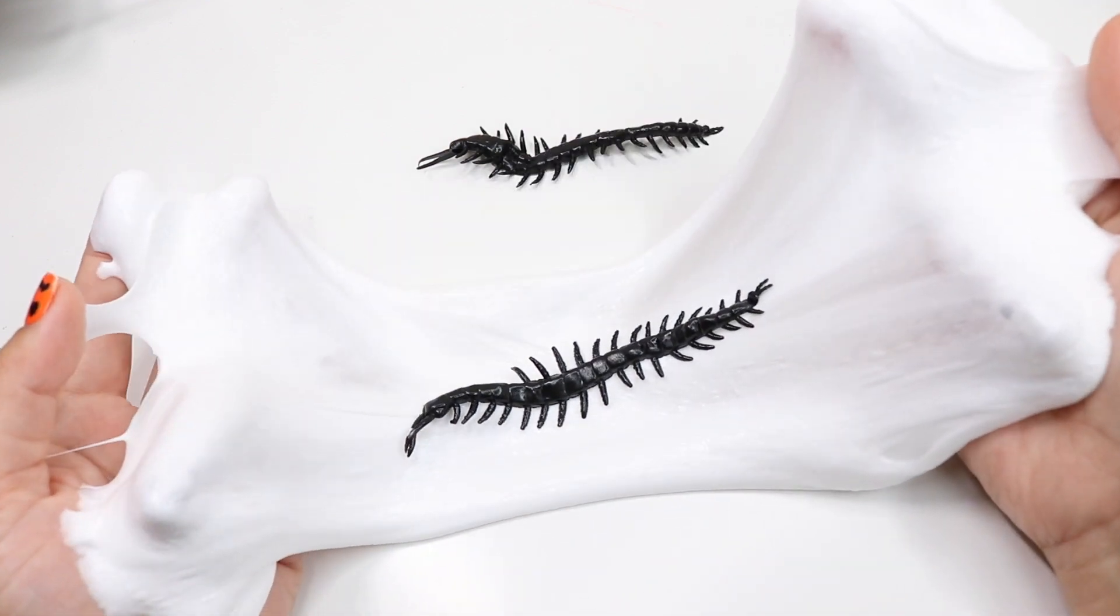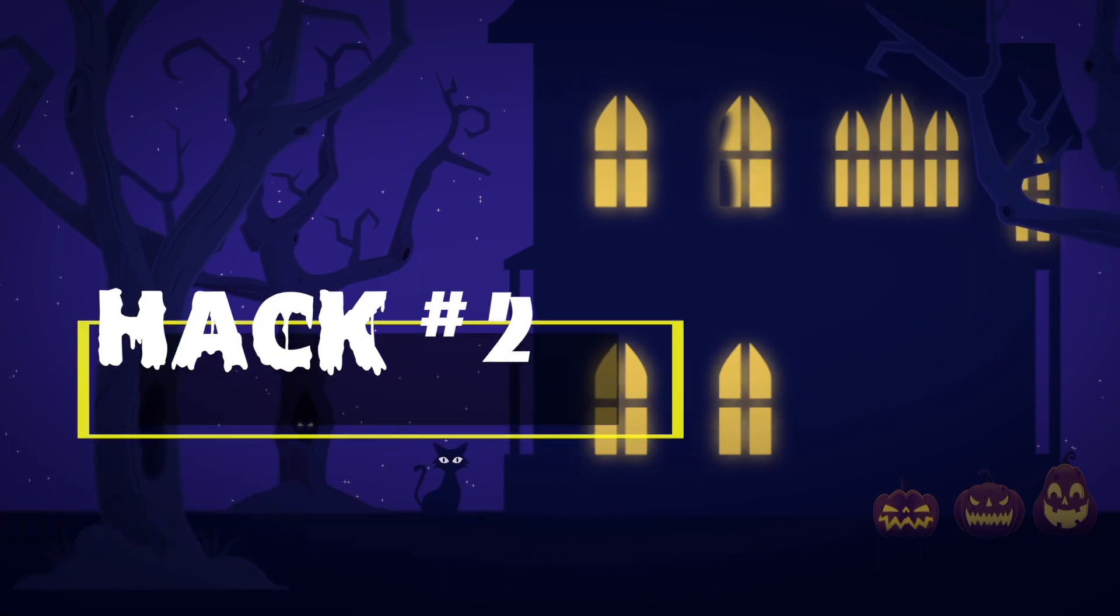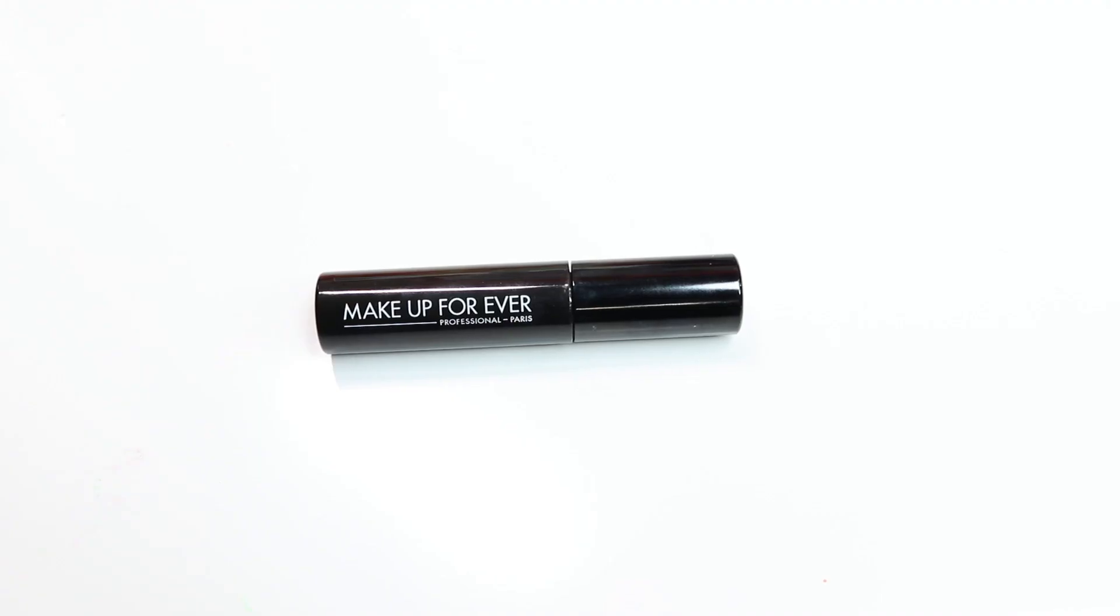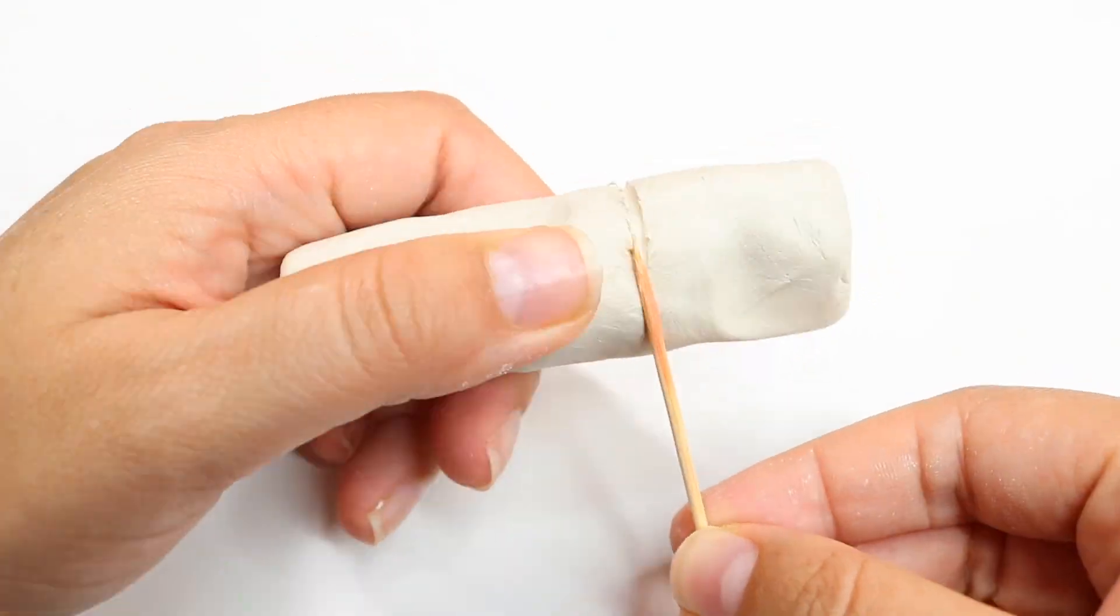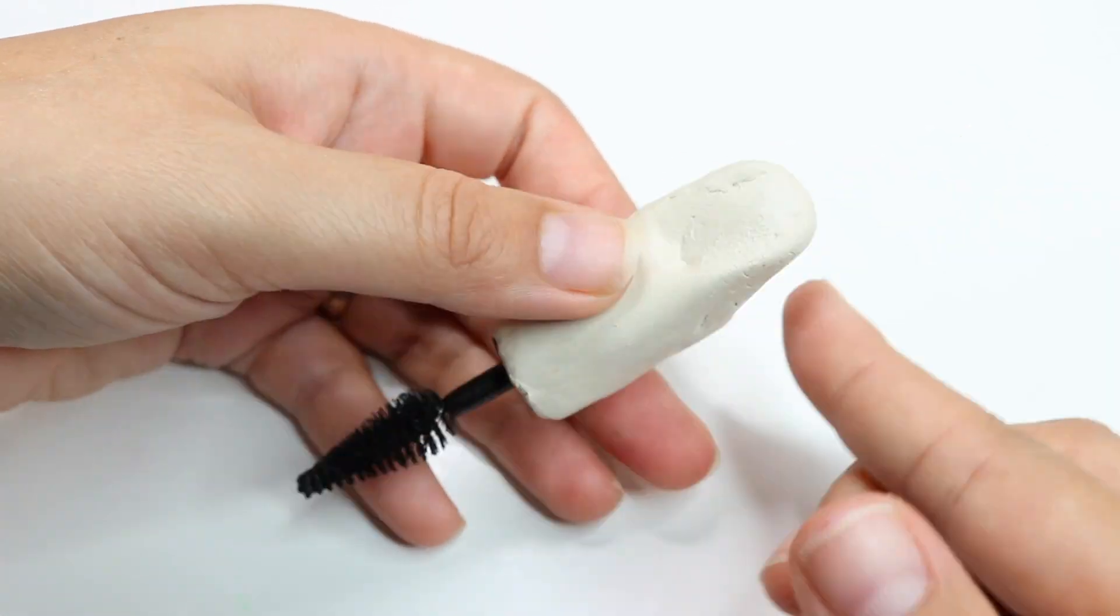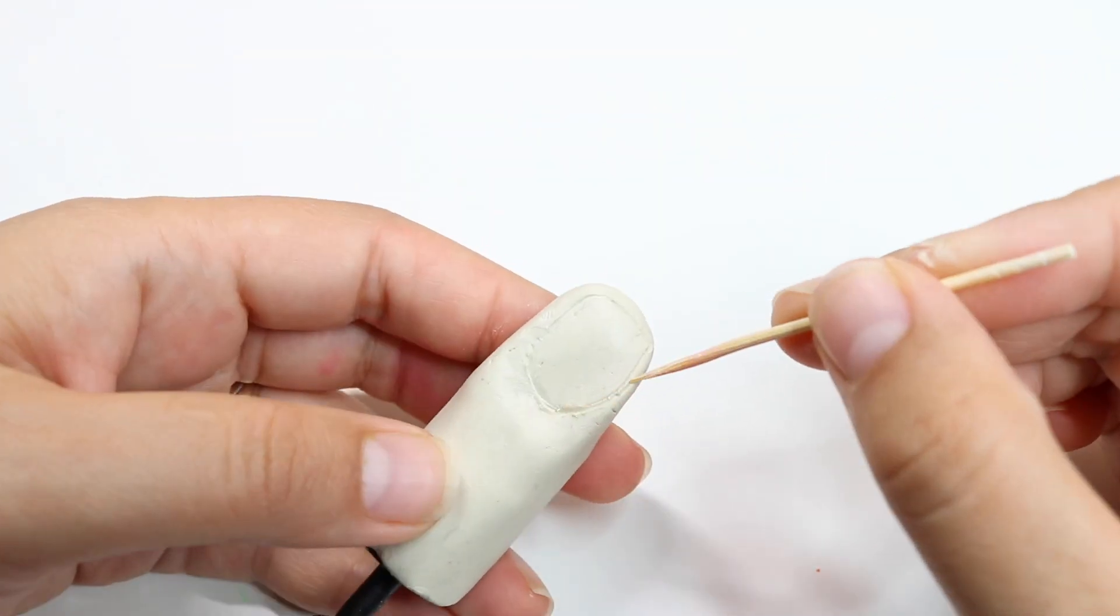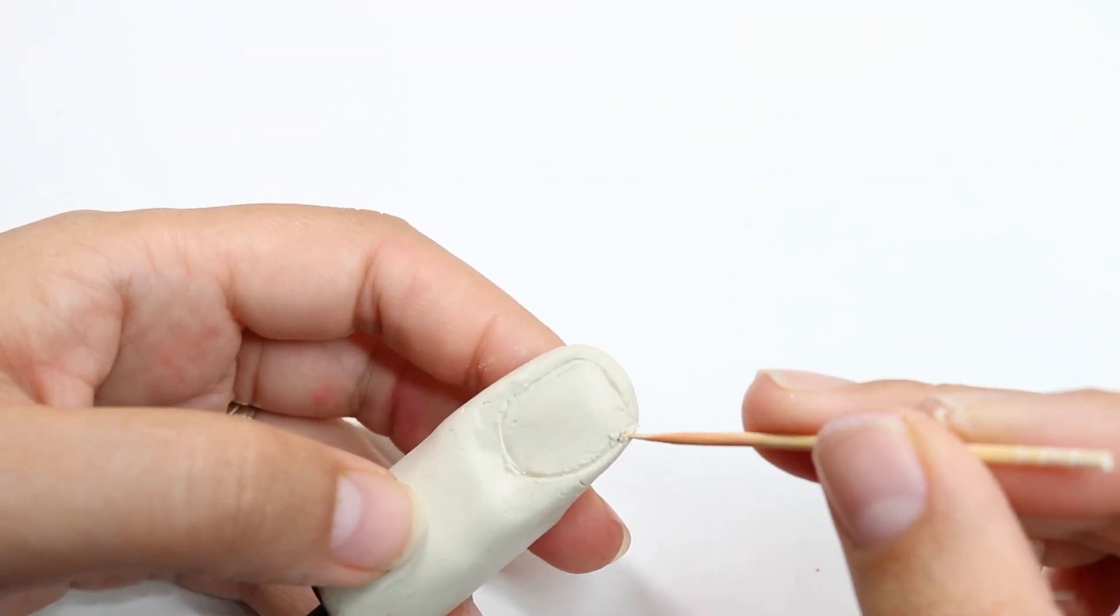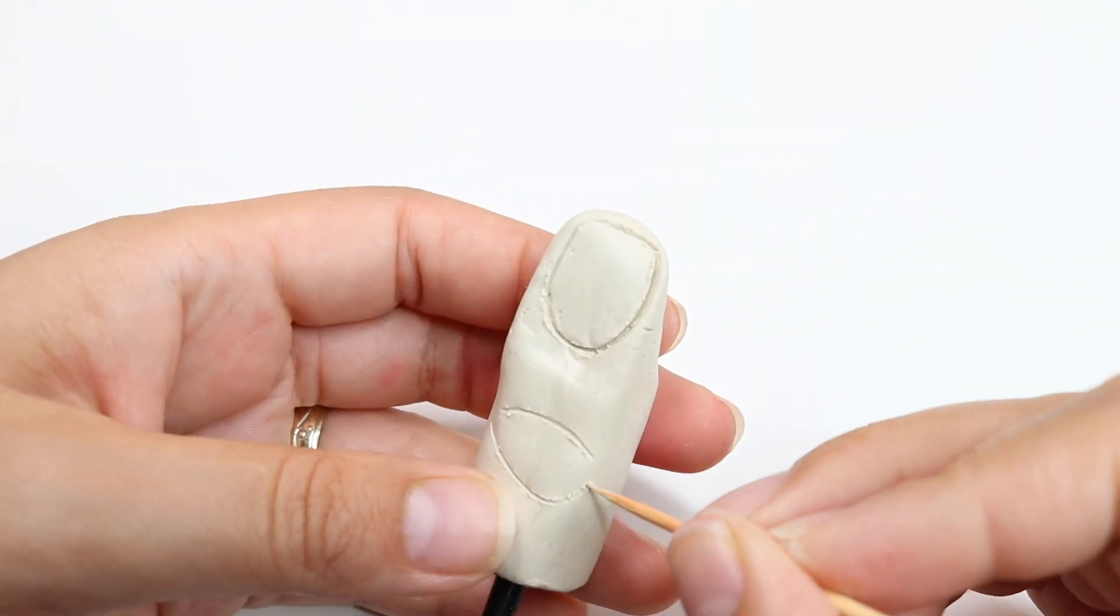For this awesome hack you're going to be needing air drying clay and a mascara that you have. What you're going to do is grab the clay, and what I did is I divided it into two parts so the clay wouldn't dry as one whole piece. I started shaping the finger shape.